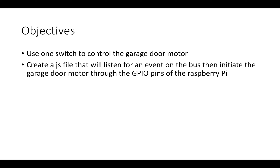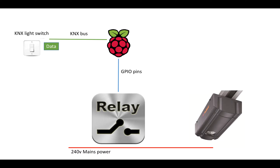The objective of this tutorial is we're going to create a switch in the KNX system which when you press it will effectively open the garage door, turning on the garage door motor. To do that we're going to have to create a JavaScript file which will listen to a specific event on the KNX bus. And then when it hears that event it will initiate the garage door motor through a relay, where the GPIO pins on the Raspberry Pi switch the relay.